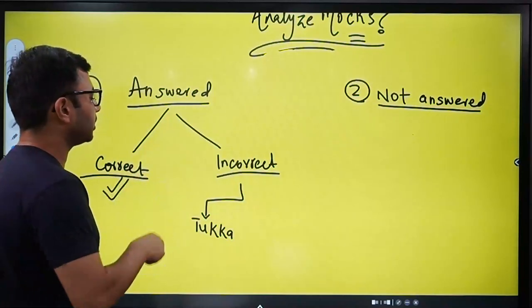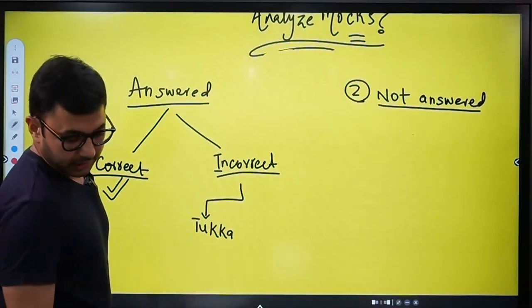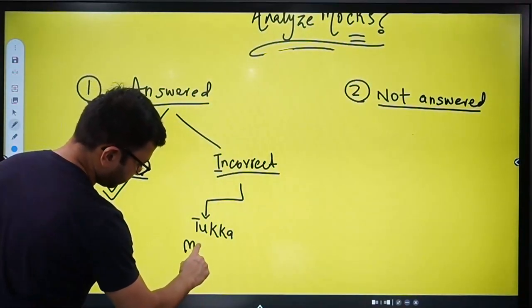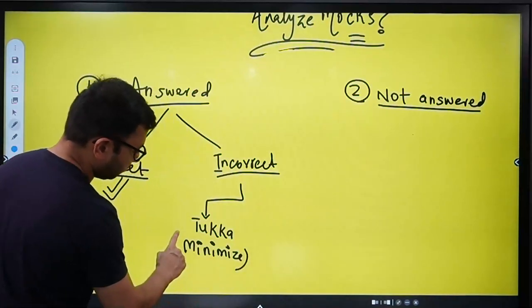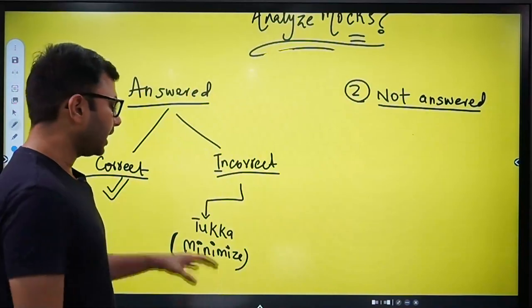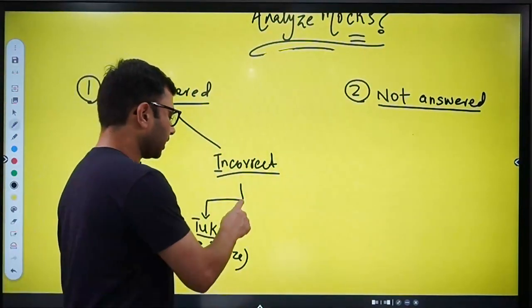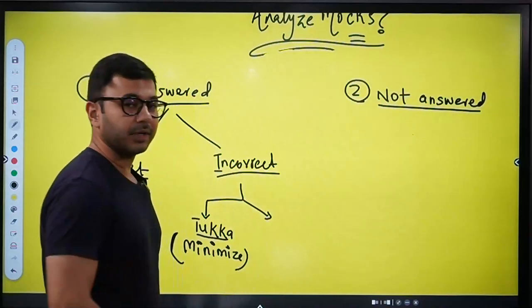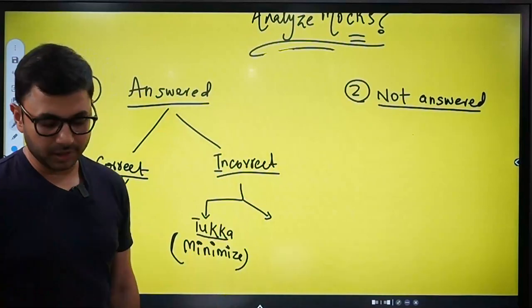But, if you answered it, you answered it incorrectly, and it was a fluke, then you have to try and minimize it. This kind of mistake should not happen, because you are penalizing yourself without any reason. There is no reason to answer a question incorrectly, and that too, it being a fluke. Meaning, before answering, you're not thinking about whether you know an answer or not. So you have to minimize this.